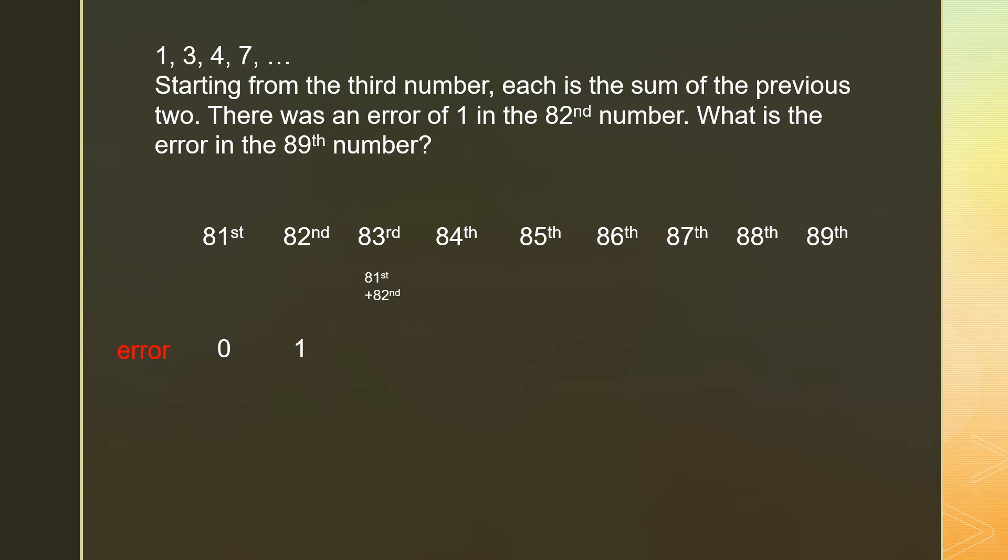The 83rd number is the sum of the 81st and 82nd. But there was an error of 1 in the 82nd, so we need to carry the error as well.